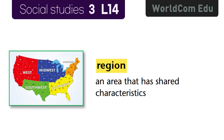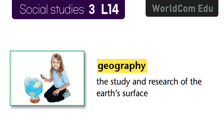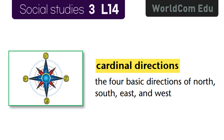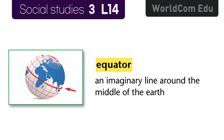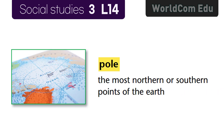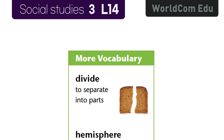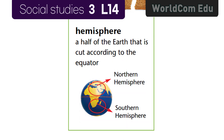Lesson 14: Our Earth. Vocabulary review — region: an area that has shared characteristics. Geography: the study and research of the earth's surface. Cardinal directions: the four basic directions of north, south, east, and west. Intermediate directions: directions between the cardinal directions. Equator: an imaginary line around the middle of the earth. Pole: the most northern or southern points of the earth. Divide: to separate into parts. Hemisphere: a half of the earth that is cut according to the equator.